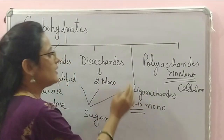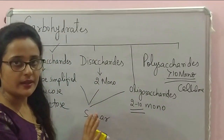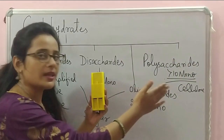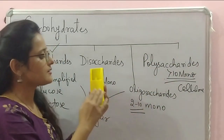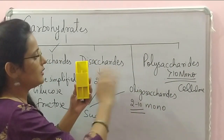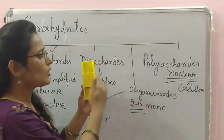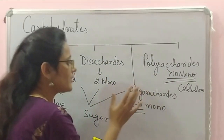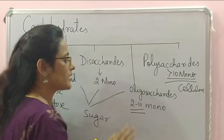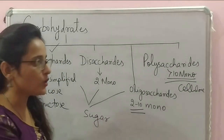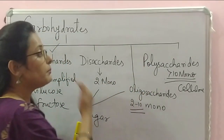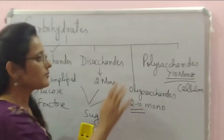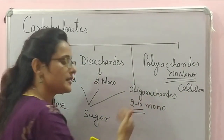Oligosaccharides are made up of two to ten molecules of monosaccharides. It is not necessary that all units are the same type — they may be of different types. Examples of oligosaccharides are raffinose and maltotriose. Polysaccharides are made up of many monosaccharide units — more than ten monosaccharide units. Examples are cellulose, glycogen, chitin, etc.